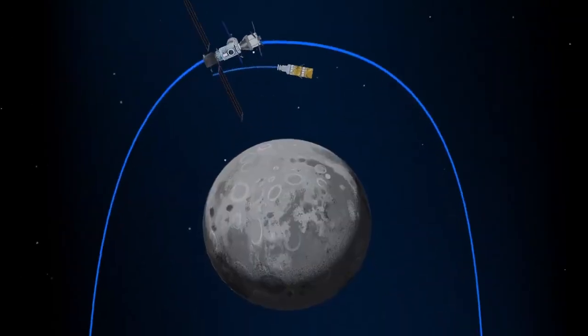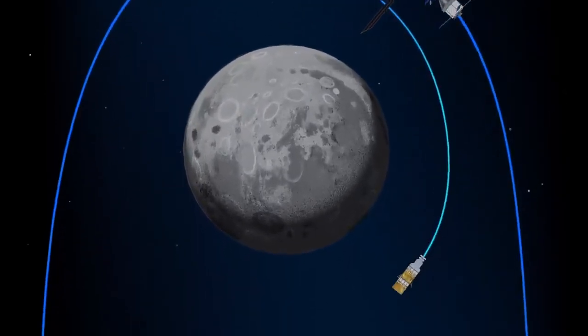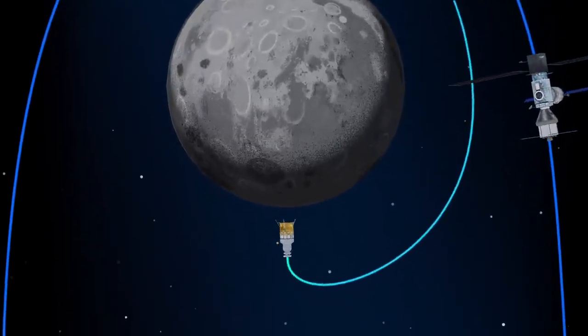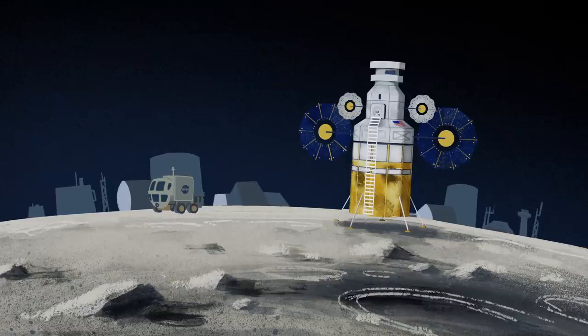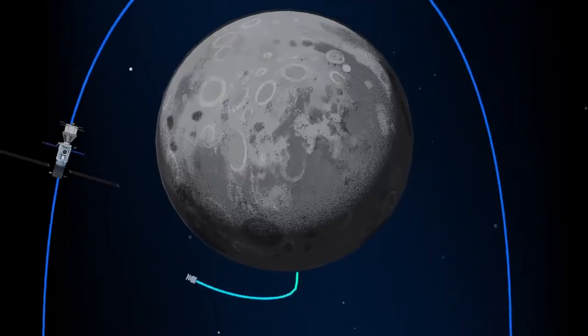The lunar lander system itself is built for three unique steps: descending from the halo orbit of Gateway down to a low lunar orbit, descending from low lunar orbit to the surface, and once the lunar mission is complete, launching from the surface of the Moon and ascending all the way back to the orbiting Gateway.